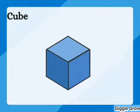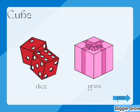A cube is a shape with six equal square faces. All sides are the same length and it has sharp edges and corners. Cubes are common in toys, boxes and buildings.